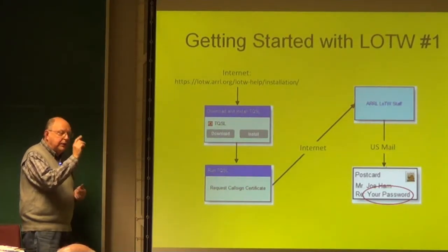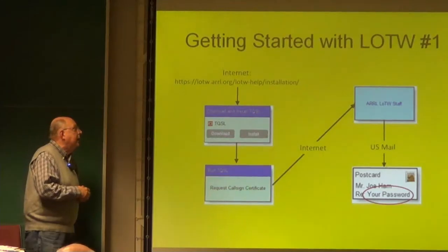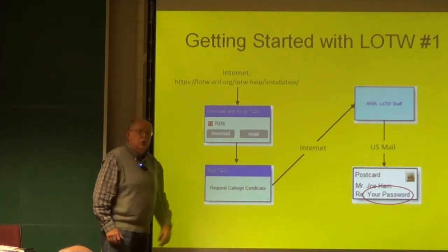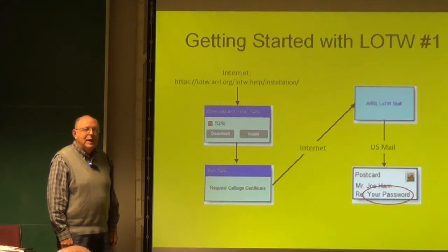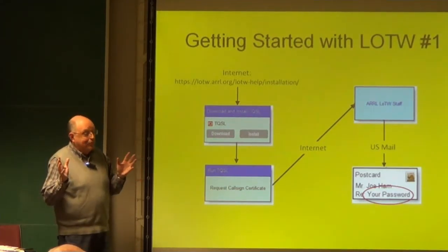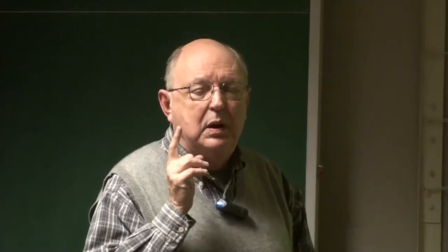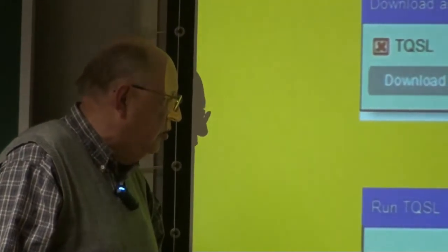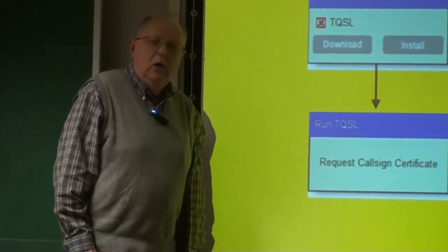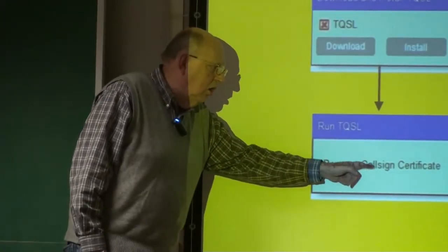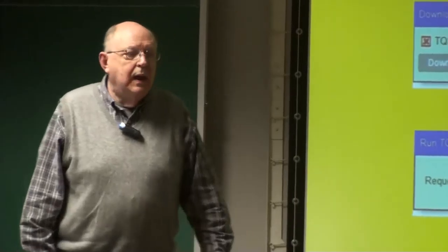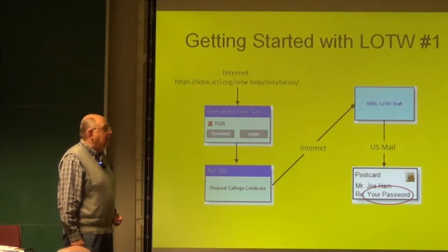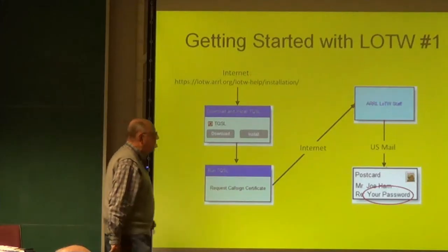How do you get started with Logbook of the World? Go to the ARRL website and select Logbook of the World. There's a help file that will invite you to download the TQSL application. Today you download a single application that does everything you need. Download and install it, run the application, and it will offer to request a call sign certificate. Press that button — it electronically sends a message over the internet to the ARRL.